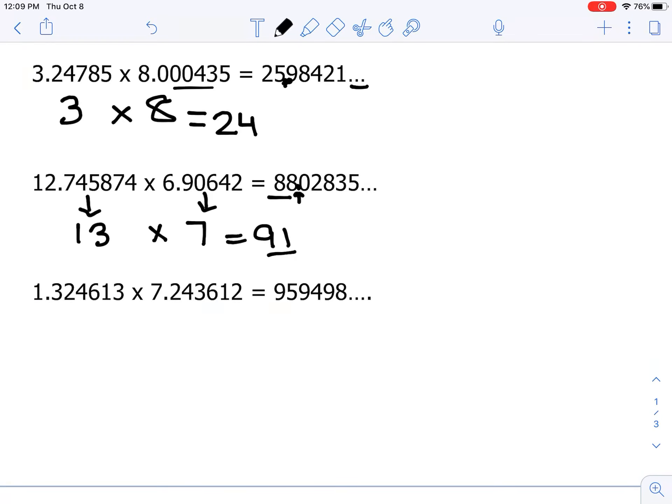Our last question, I'm going to round the first number to 1. It's closer to 1 than it is to 2. And I'm going to round that second number to 7. And when we multiply, we get 7 as a product.